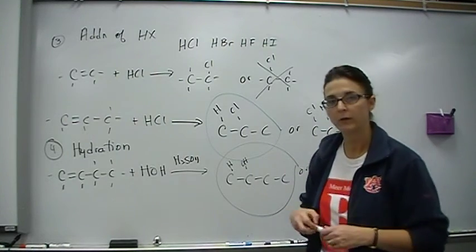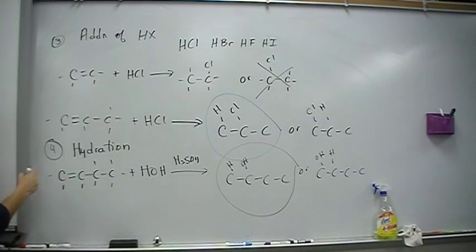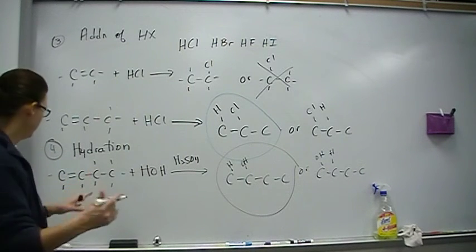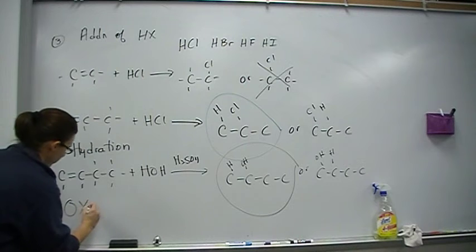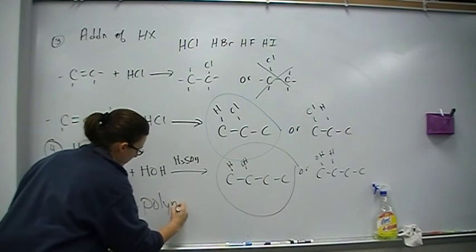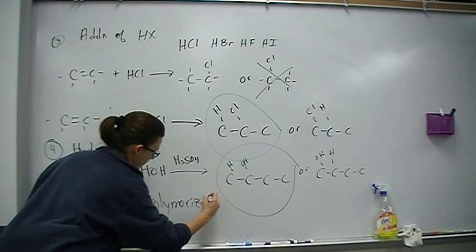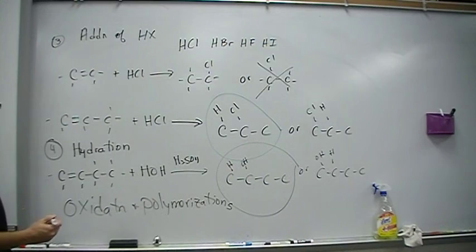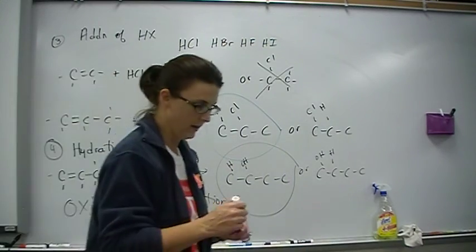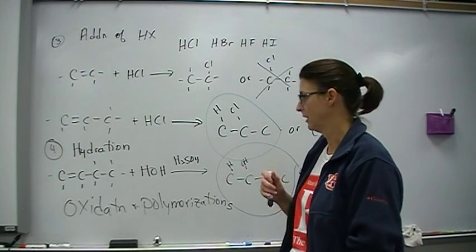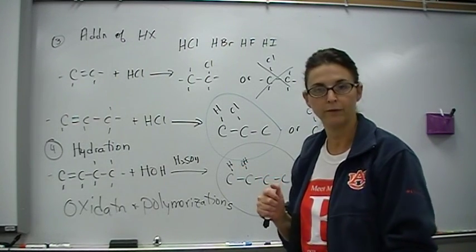Now there are two other reactions. I'm going to stick them down here at the bottom. Other than these four addition reactions we've done, we're not going to do the reactions, just going to name them. They're called oxidation and polymerization. That's two reactions other than addition reactions that alkenes undergo. Fill in the blank on the test. All right. I think that's all the time I got for this one. Stay tuned. Next segment is special for all you swine flu people.